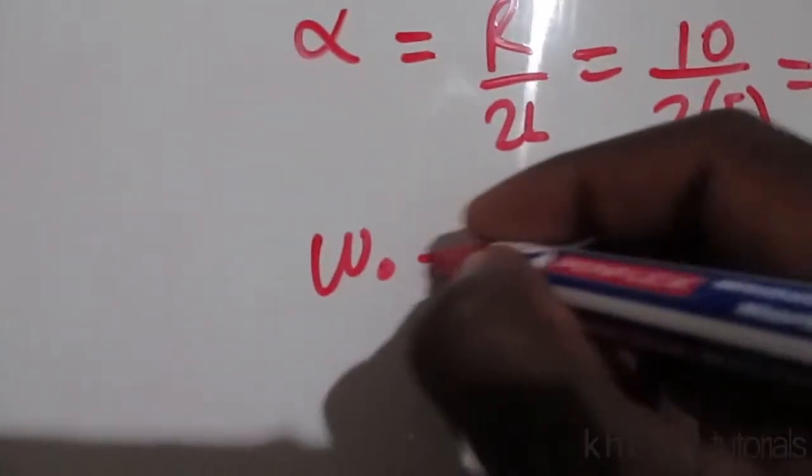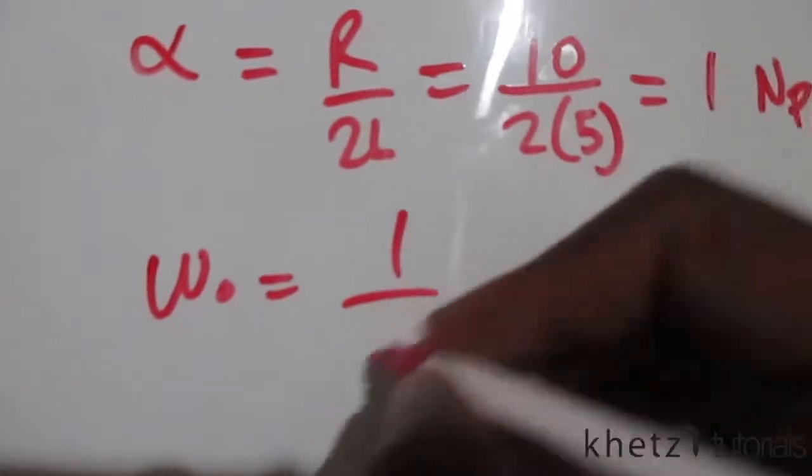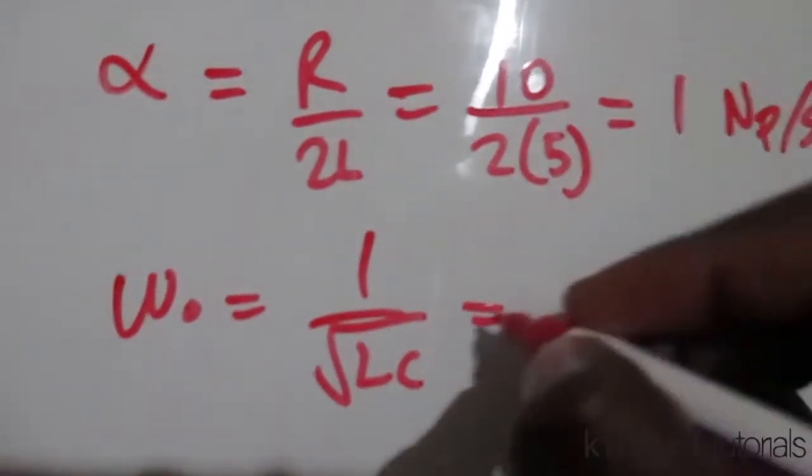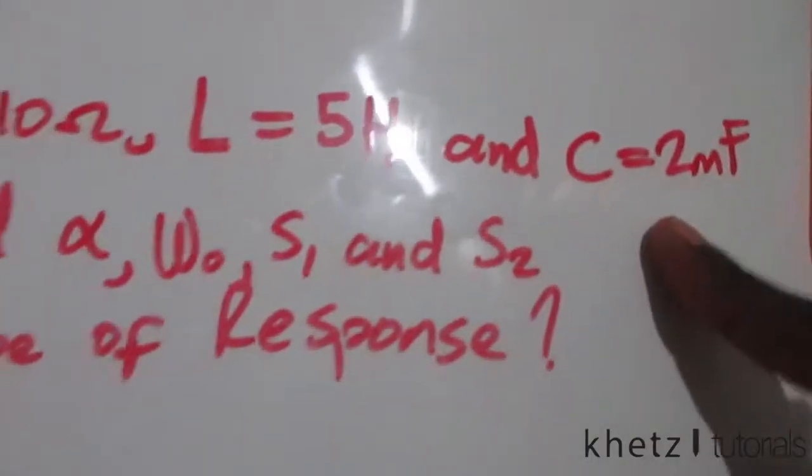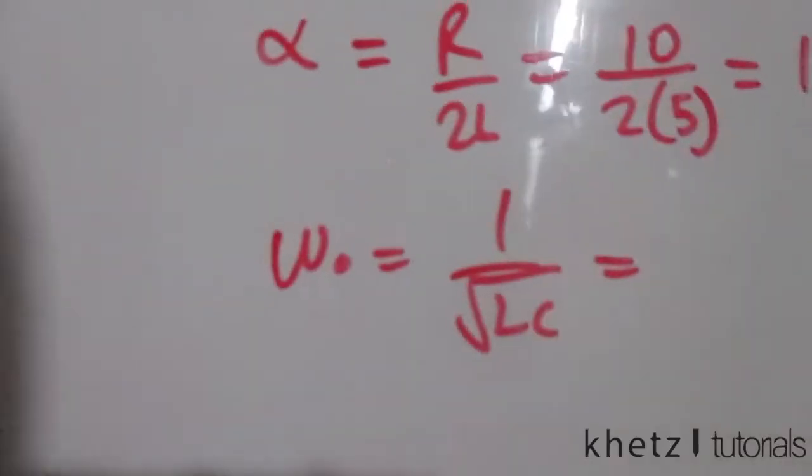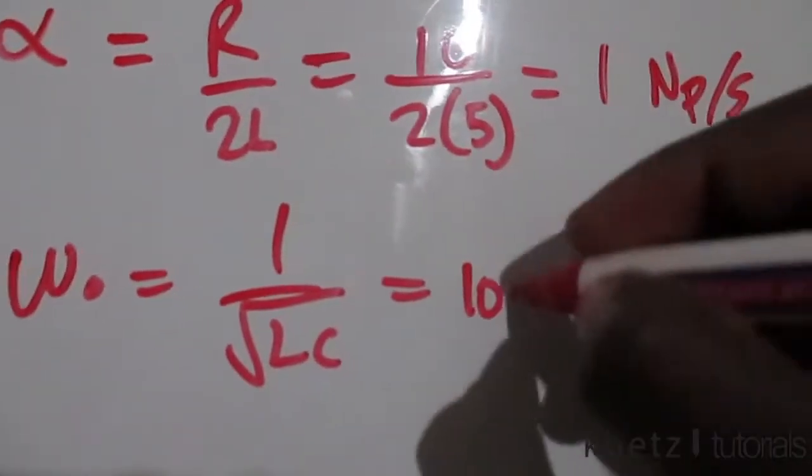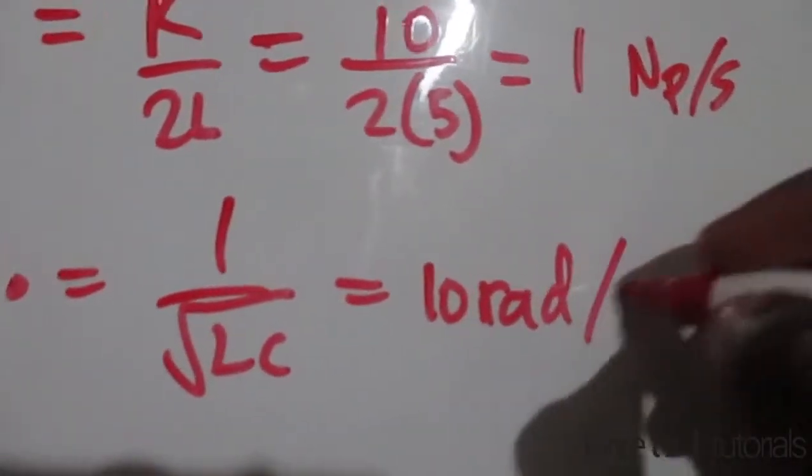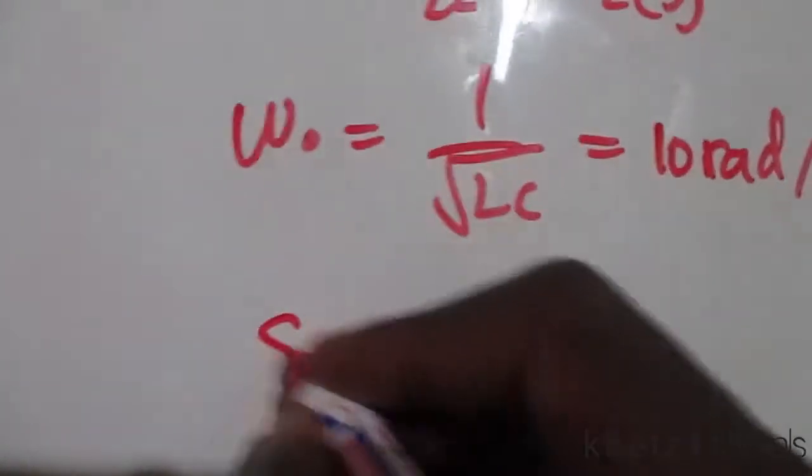Omega_o, the resonant frequency, equals 1 divided by the square root of LC. Substituting L equals 5 and C equals 2 millifarads gives a resonant frequency of 10 radians per second. From this we can find the roots.